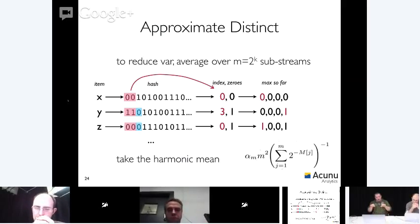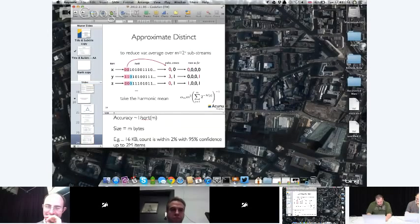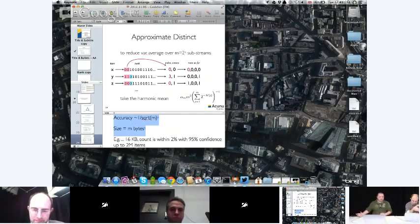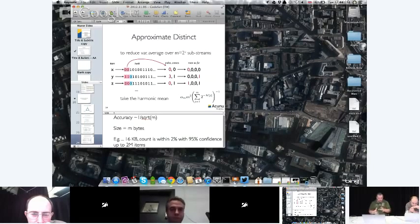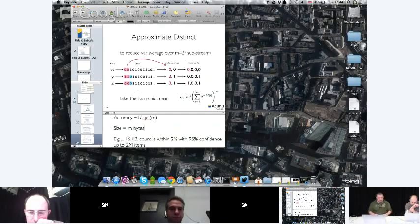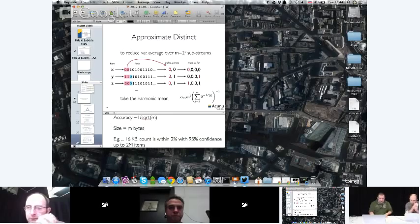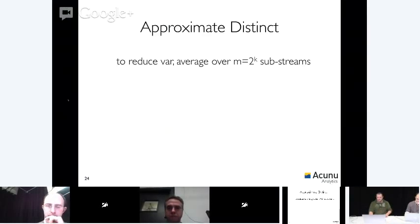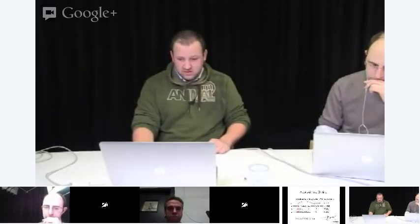And then to find out how many distinct items we've seen, we just take the average of that vector. This is really powerful because if you want more accuracy, you just divide it up into more substreams. But that's going to use more space and take longer at query time. So it gives you that trade-off between accuracy and query time, which is exactly what we're looking for. I've got some notes on this slide that says the accuracy is one over square root of the number of substreams you've got. A good example is for 16 kilobyte sketch, we call this array of maximal counters, we can get to within 2% accuracy with 95% confidence for 2 million distinct items. This is pretty impressive. This scales with the number of distinct items, not with the number of events. There we go, that's pretty much how we do approximate count distinct.